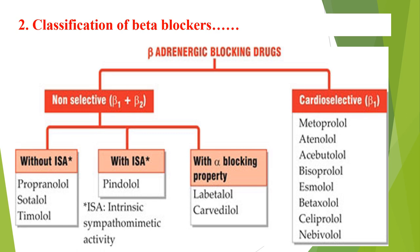Cardioselective drugs, which only inhibit the beta-1 receptor, include metoprolol, atenolol, acebutolol, bisoprolol, esmolol, betaxolol, celiprolol, and nebivolol. These are the drugs which selectively inhibit the beta-1 receptor and are classified as cardioselective.